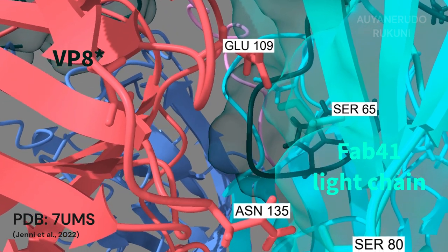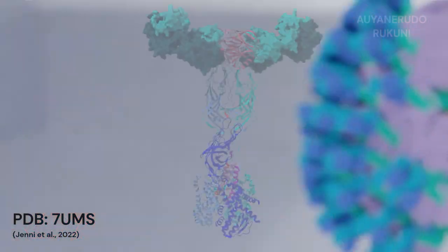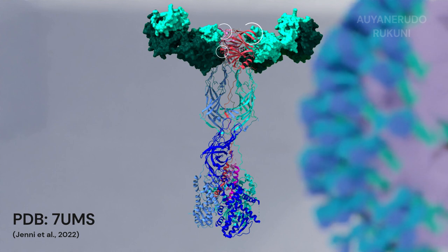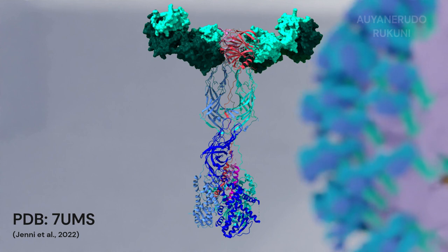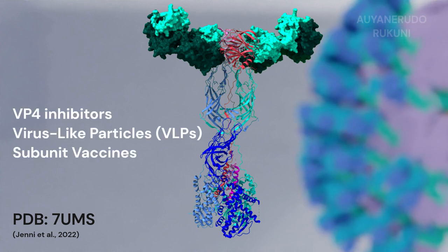These structural studies of precise antibody-antigen interactions at high resolutions have allowed researchers to identify key regions involved in rotavirus infectivity. This has opened new avenues for identification of inhibitors or design of virus-like particles and subunit vaccines that can elicit a robust immune response against rotavirus.